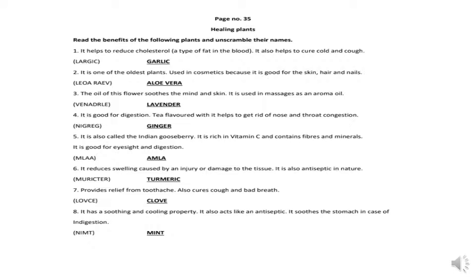After this, we are going to do the exercise given on page number 35. The heading is: read the benefits of the following plants and unscramble their names. As we have already studied about the healing plants, now we are going to solve our exercise based on that. There are some clues given, so let us read these clues and try to identify the name of the healing plant.